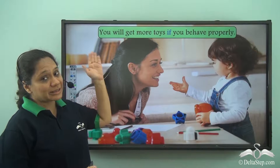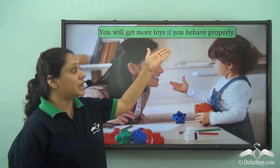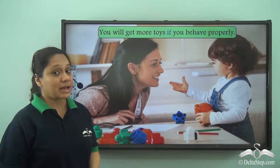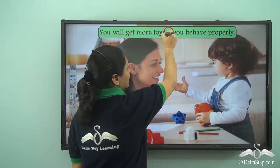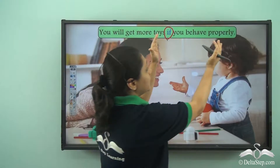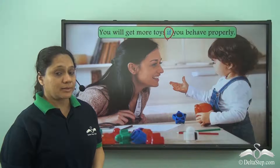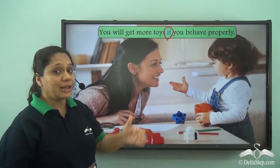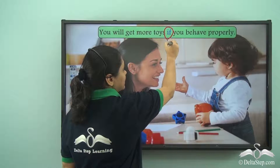Let us read this sentence: You will get more toys if you behave properly. We understand that 'if' is a conjunction. What is it joining? It is joining 'you will get more toys' with 'you behave properly.' If we read the sentence carefully, 'if' is putting a condition in the sentence.